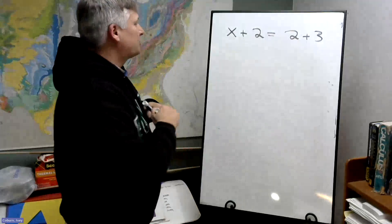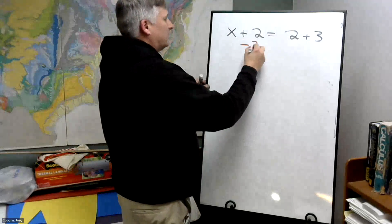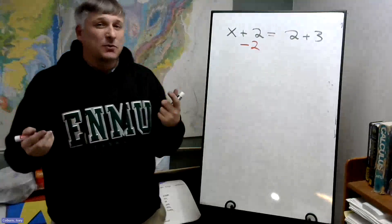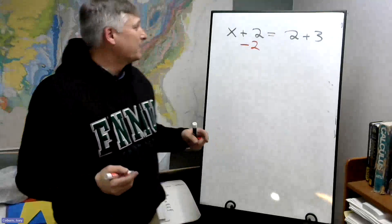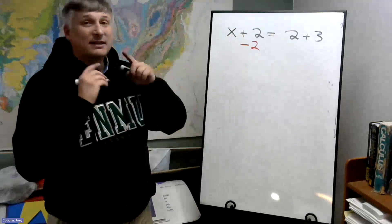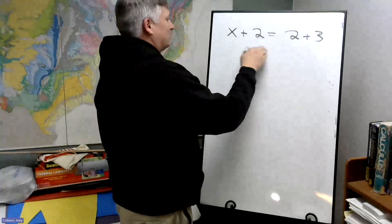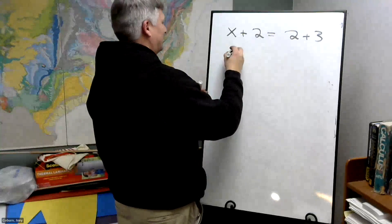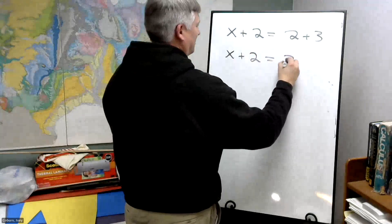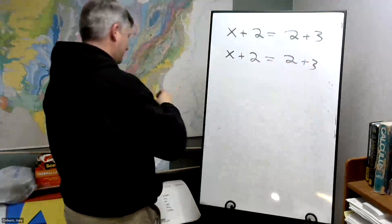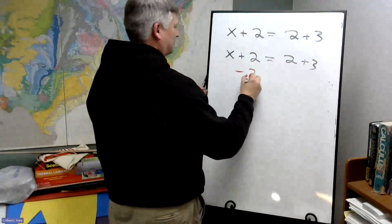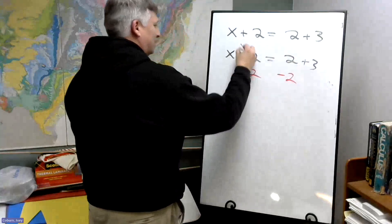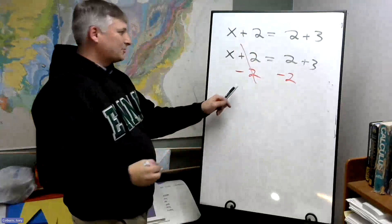And so what we'll do is we'll subtract from the plus two, and this is where the opposite operators come in - a plus and a minus cancel out. So what I'll do, I'll go to the next step here, subtract two, and that canceled.